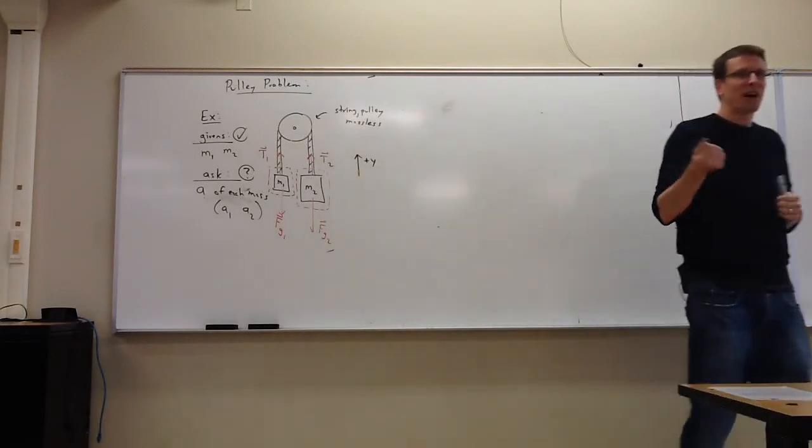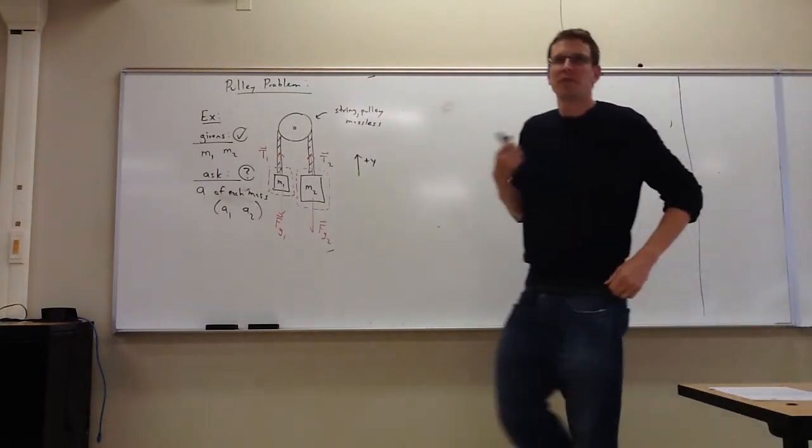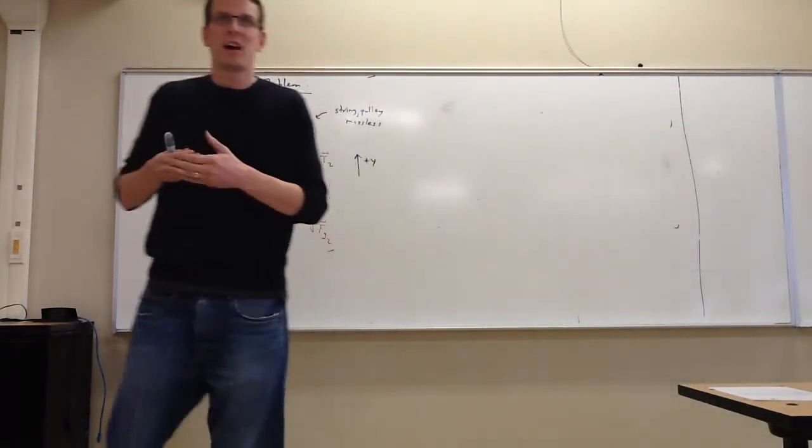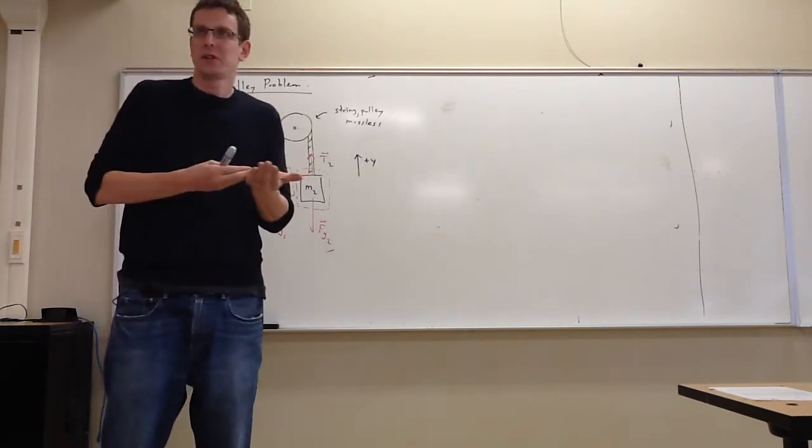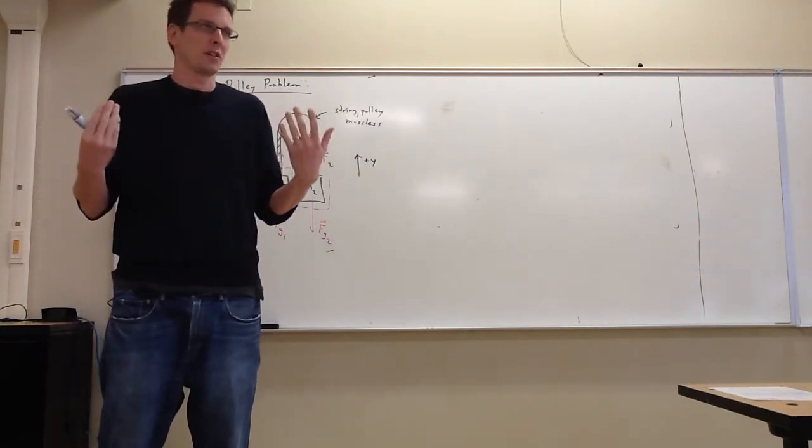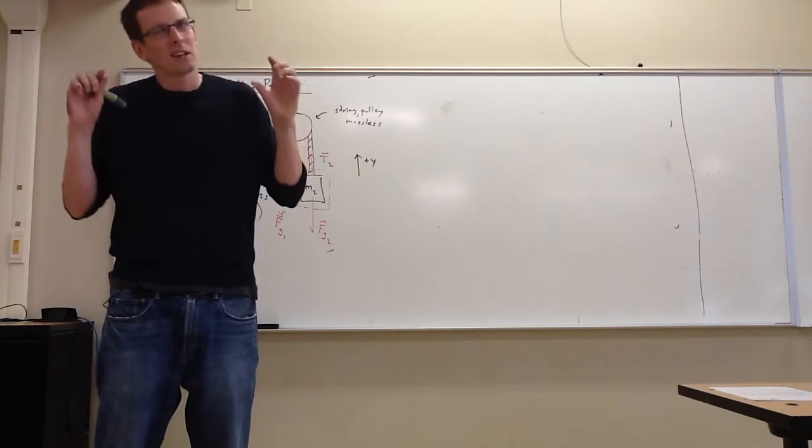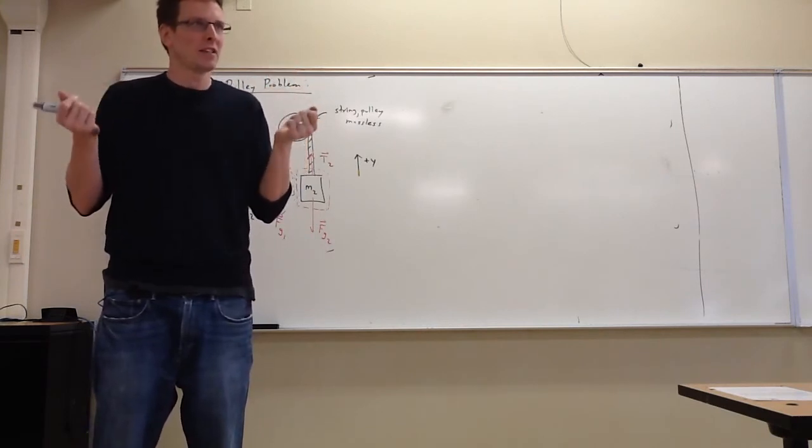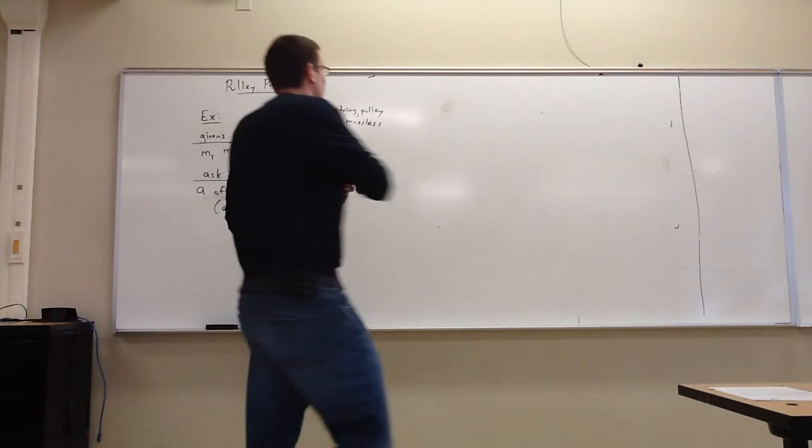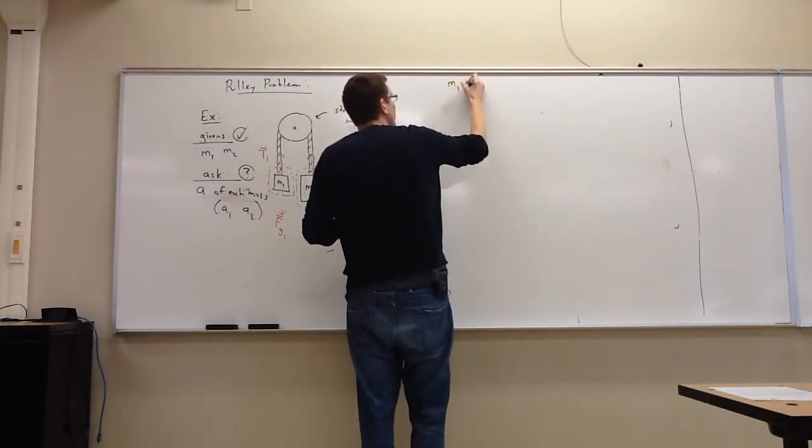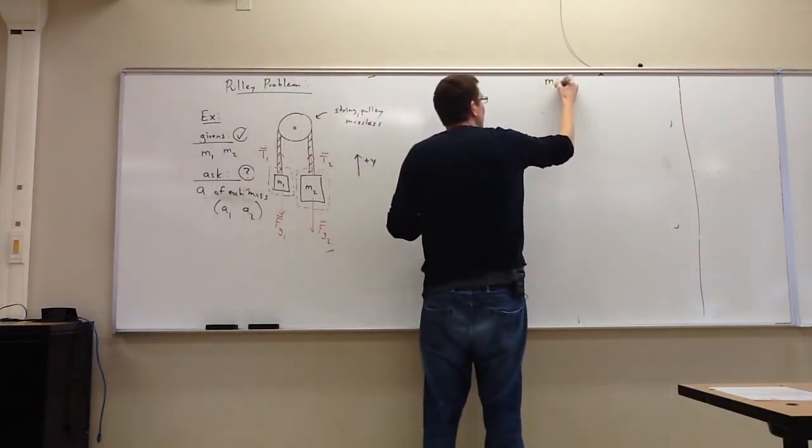So on to step five. Step five was to write down an x equation and a y equation for an object. A little twist here. We don't have an x equation, but we do have a y equation for two objects. So let's write those down here real quick. And then we'll pick up.